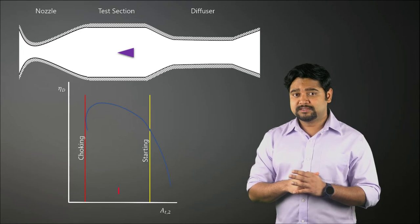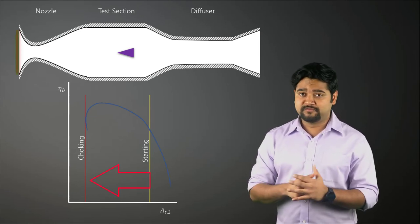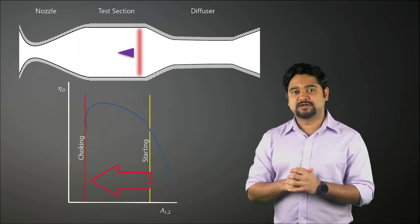If AT2 is less than the starting value, the normal shock will remain upstream of the diffuser and the wind tunnel will not start.